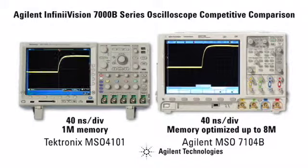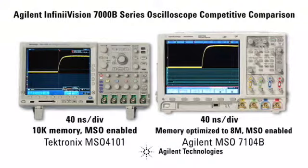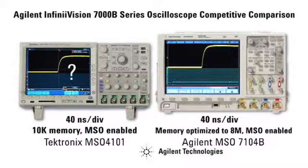Returning to our original settings once more and then enabling the mixed signal oscilloscope digital channels, we see that Agilent continues to show the glitch. But yet again, the Tektronix scope is unable to capture it, even after an hour with infinite persistence turned on.